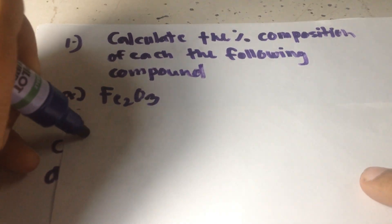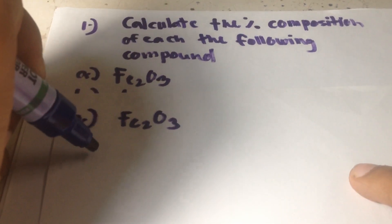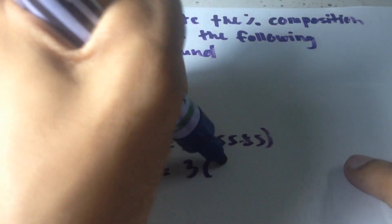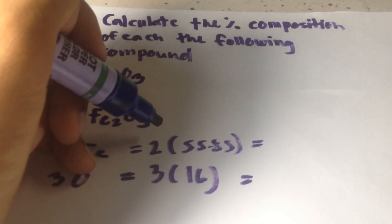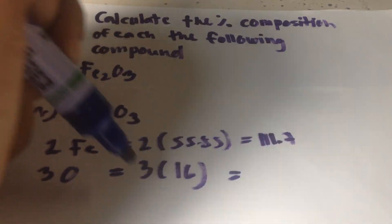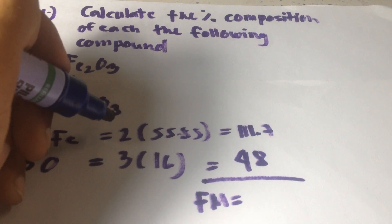In letter A, we have iron(III) oxide. The formula mass uses 2 moles of iron and 3 moles of oxygen. So, 2 times 55.85 equals 111.7, and 3 times 16 equals 48. The formula mass is equal to 111.7 plus 48, which is 159.7 grams per mole of iron(III) oxide.